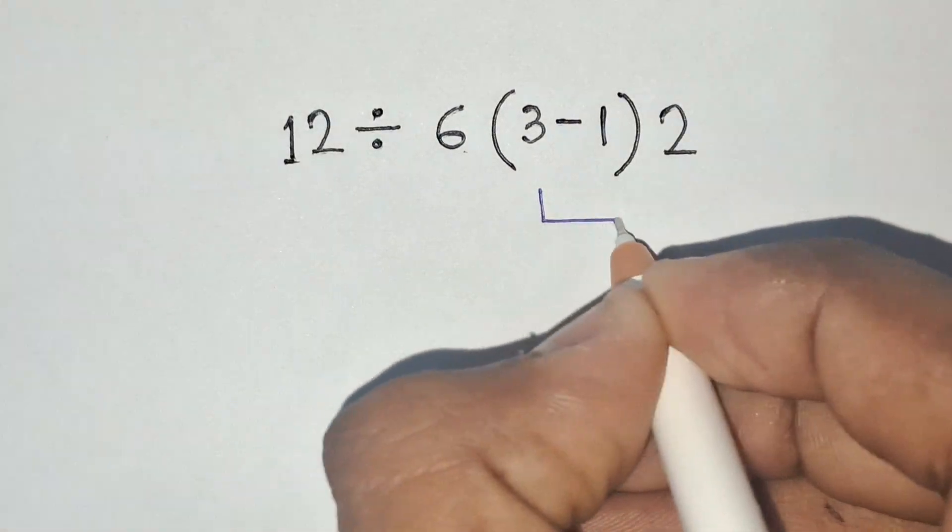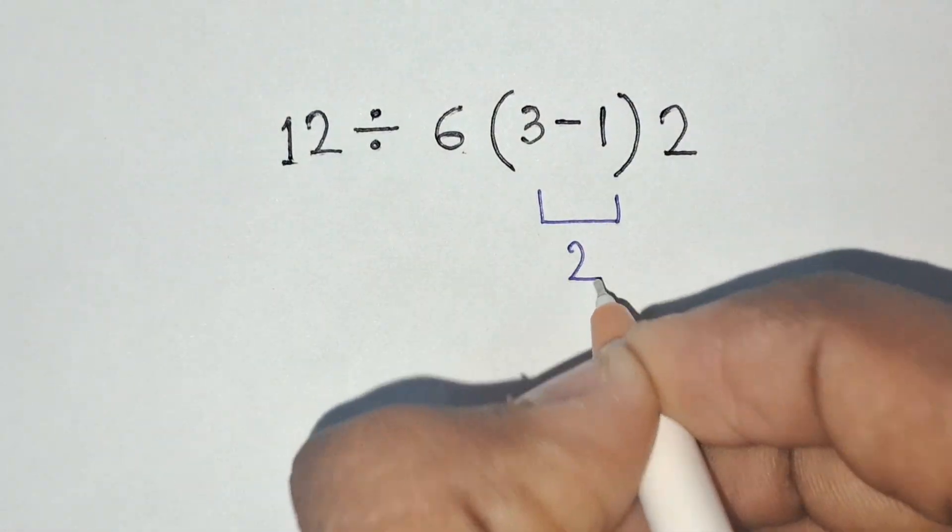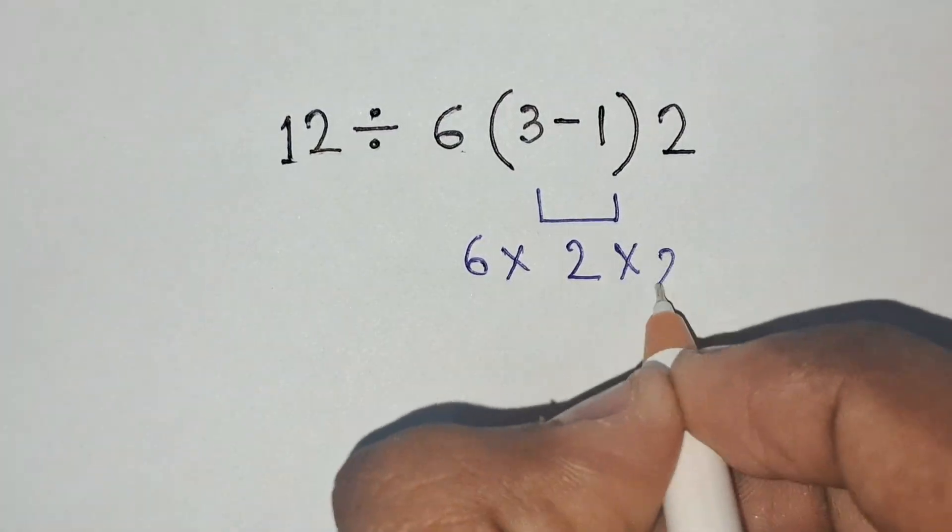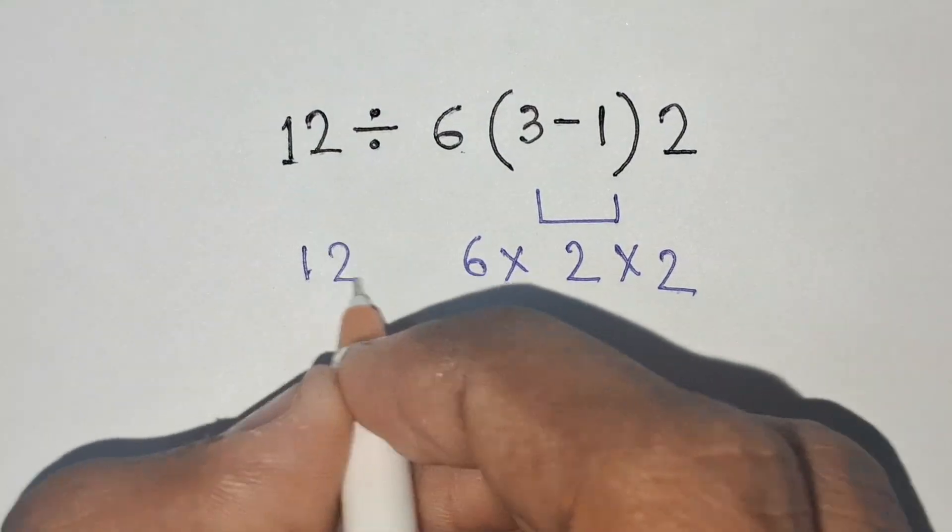3 minus 1 equals 2. So, 6 times 2 times 2 that is divided by 12.